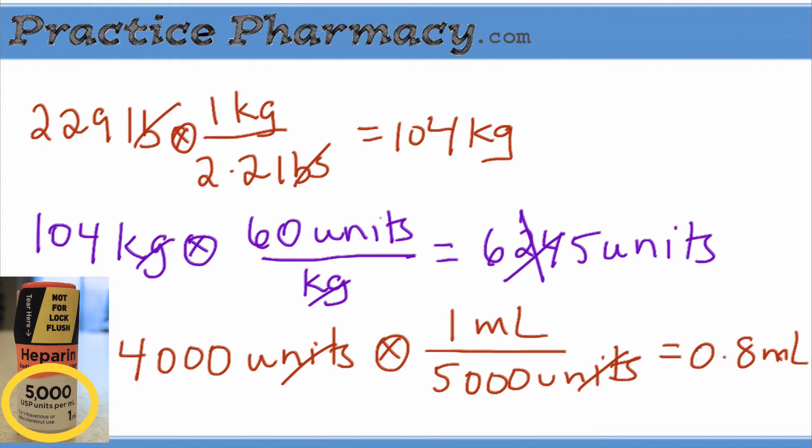If you've done a little math, you might see that we could start with 229 pounds and set this up using dimensional analysis so that we just go straight through and come up with our answer of 0.8 milliliters, but if we had done that, we might miss the fact that the calculated dose would be too high.